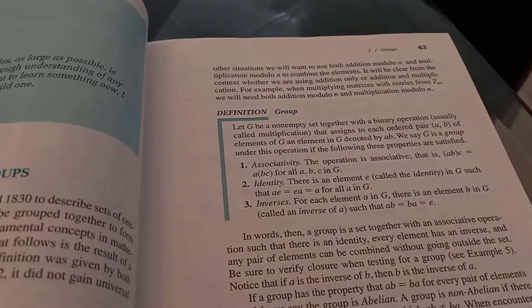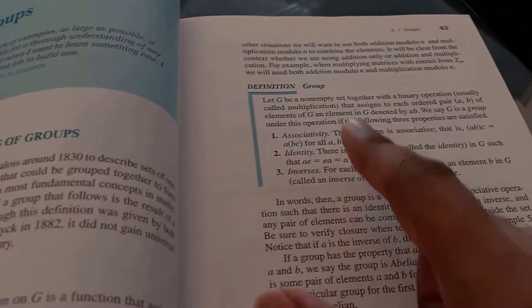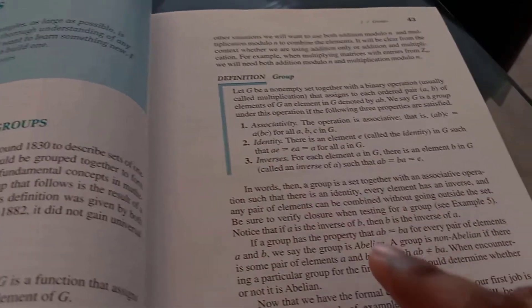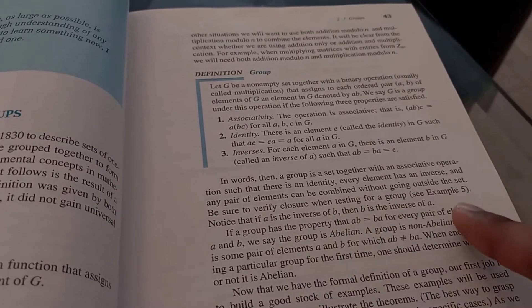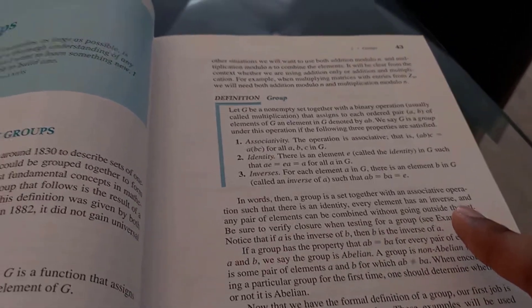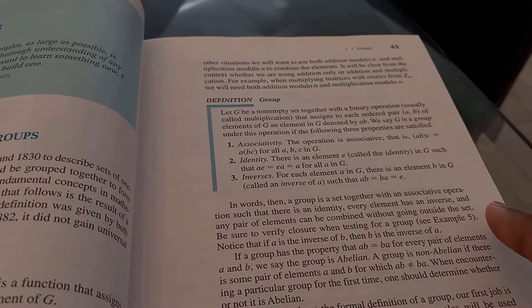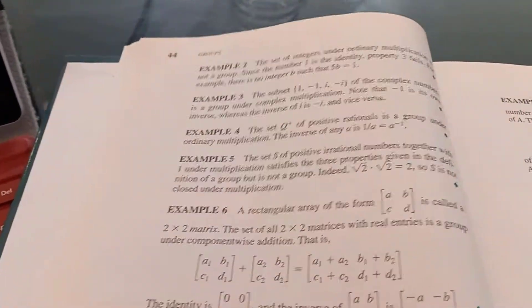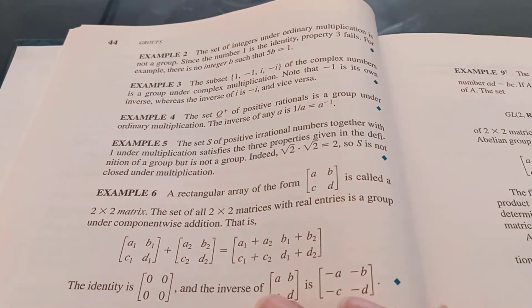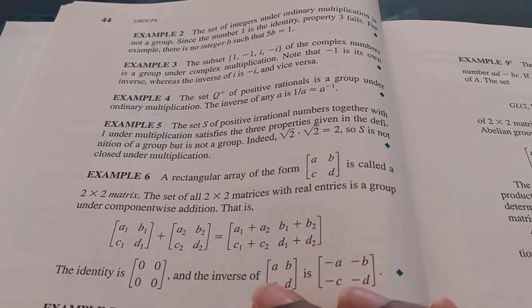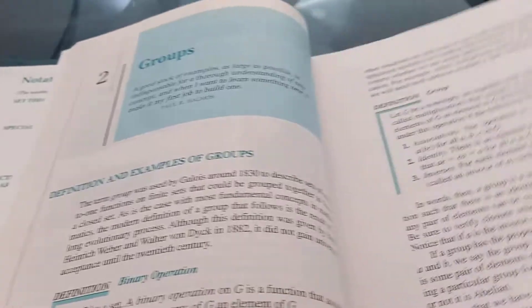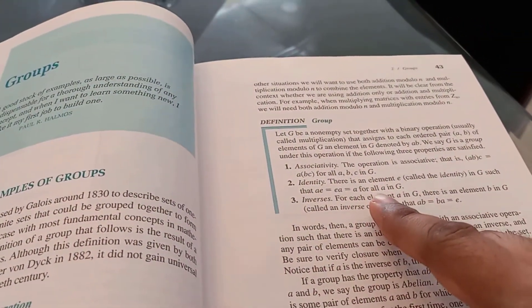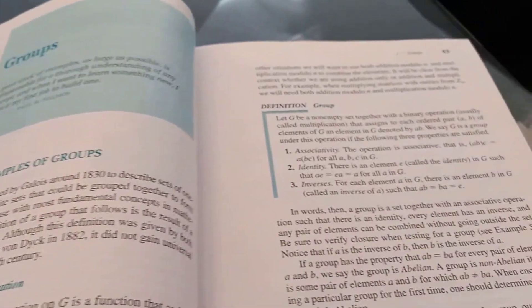For example, they give you the definition of a group and you see these three axioms, but then they go on to say, be sure to verify closure when testing for a group. See example five. Now they're drawing your attention to this example for a reason. If you look at example five, it says the set of positive irrational numbers together with multiplication actually doesn't form a group, even though it satisfies all three of these axioms. And that's because closure fails.